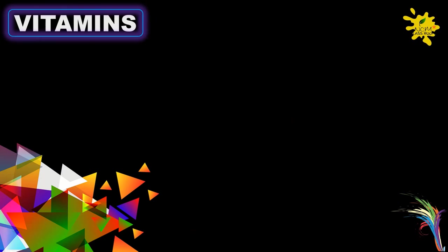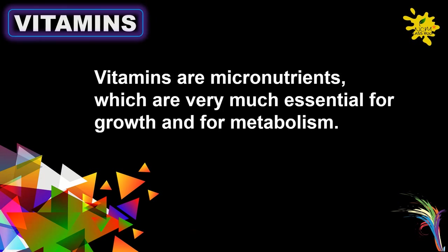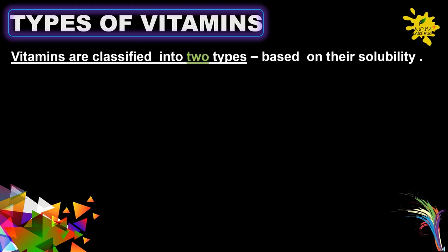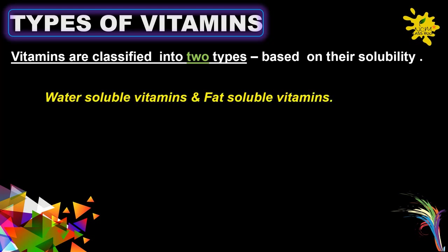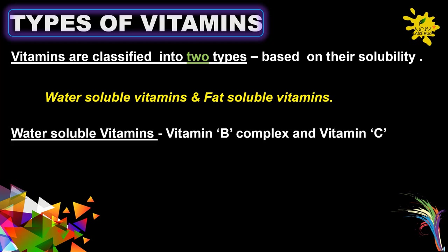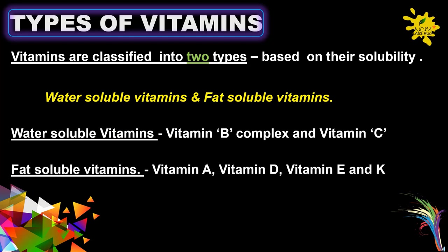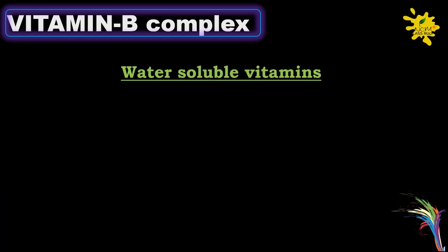Vitamins are micronutrients which are very much essential for growth and metabolism. Vitamins are classified into two types based on their solubility: water-soluble vitamins and fat-soluble vitamins. Water-soluble vitamins are Vitamin B and Vitamin C.